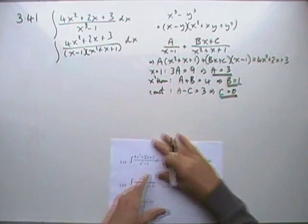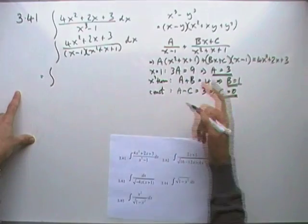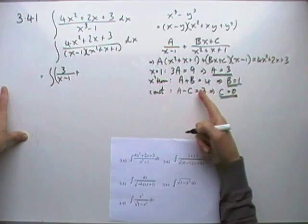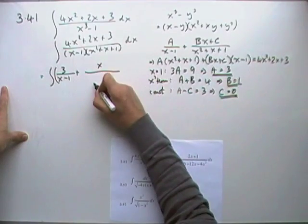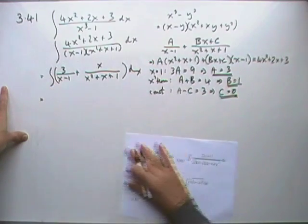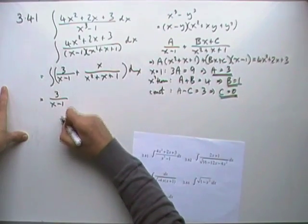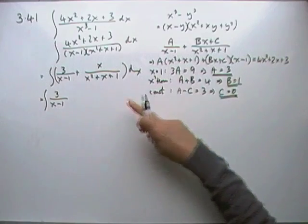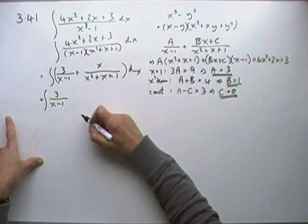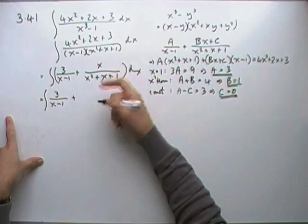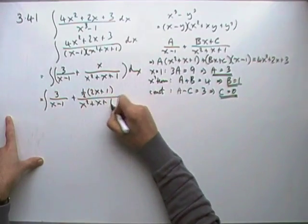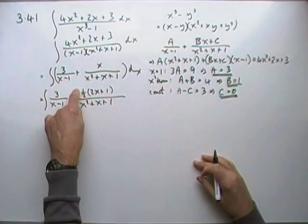Which means I can go back and rewrite this now. A was 3, so it's 3 over x minus 1 — that's perfect, so that's just a log. Plus B is 1, so that's just x over x squared plus x plus 1 dx. The derivative of the bottom is 2x plus 1. Since I've got a single x, that's half of what I want. So I could say I've got a half of 2x plus 1 over x squared plus x plus 1, and by inspection that's another log because it's half the derivative of the bottom.